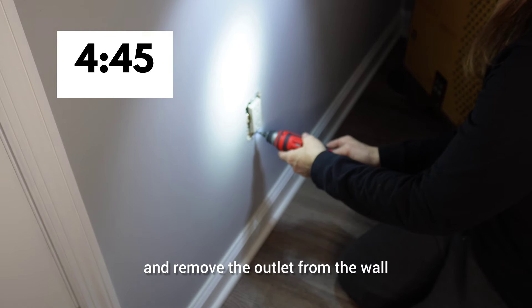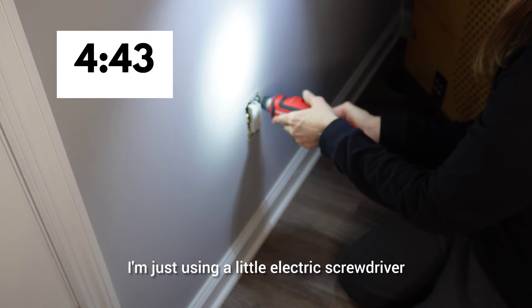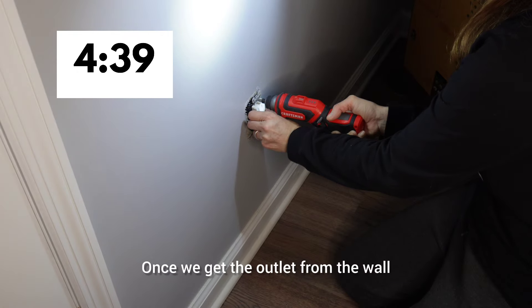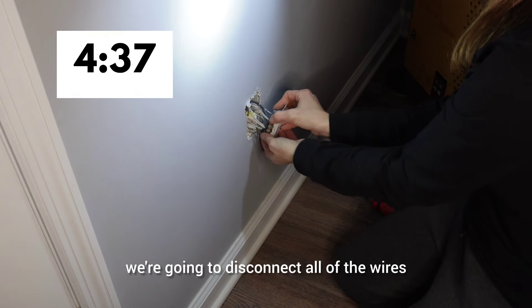Next, we're going to take a screwdriver and remove the outlet from the wall. I'm just using a little electric screwdriver. You can use a manual one. Doesn't matter. Once we get the outlet from the wall, we're going to disconnect all of the wires.